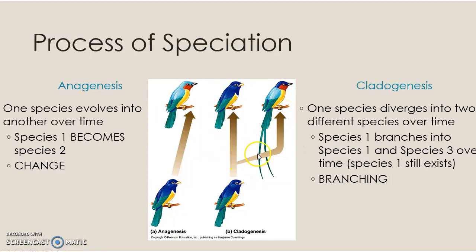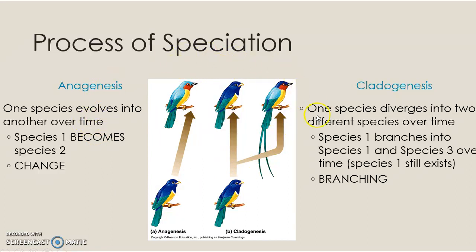So evolution branched off in cladogenesis; evolution replaced one species with another in anagenesis. This is the process of speciation — it happens one of two ways, and these are the two ways.